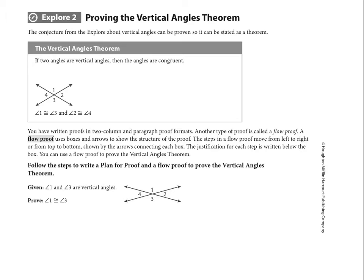Explore 2 talks about writing a proof for the vertical angles theorem, and that vertical angles theorem is in this box right here. Anytime anything's in a box, you want to highlight it or put a star next to it or somehow draw your attention to it. It's really important that you know it. We've got a diagram where we have two intersecting lines, and it says, if two angles are vertical angles, our new vocabulary word, then the angles are congruent. Vertical angles are simply when two lines intersect, the angles that are opposite each other. So 1 and 3 and 2 and 4. And what this vertical angles theorem tells us is that those pairs of angles are always congruent.